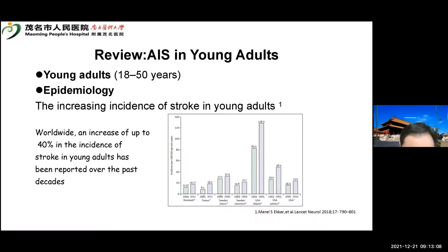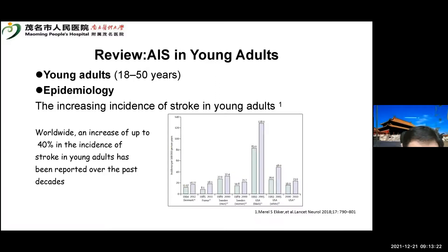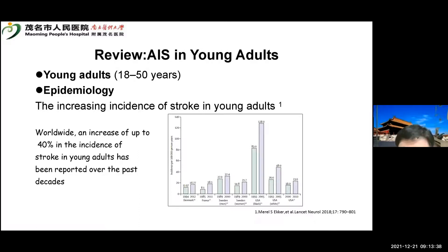To answer these questions, we reviewed the literature. First, how do we define young adults? Most studies define the population as between 18 and 50 years of age. Regarding epidemiology, we can see that worldwide there has been an increase of up to 40% in the incidence of stroke in young adults reported over past decades.